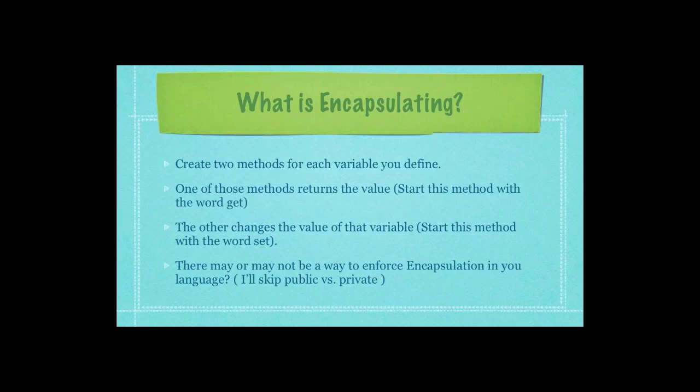With encapsulation, you create two methods for each variable that you define. One of those methods returns the value and this function is normally started off with the word get. The other changes the value of that variable and that function is normally begun with the word set. What you have to understand is encapsulation may not be enforceable in your chosen object-oriented programming language, but I'm not going to get into the difference between public and private in this presentation. I may cover that in a future presentation.